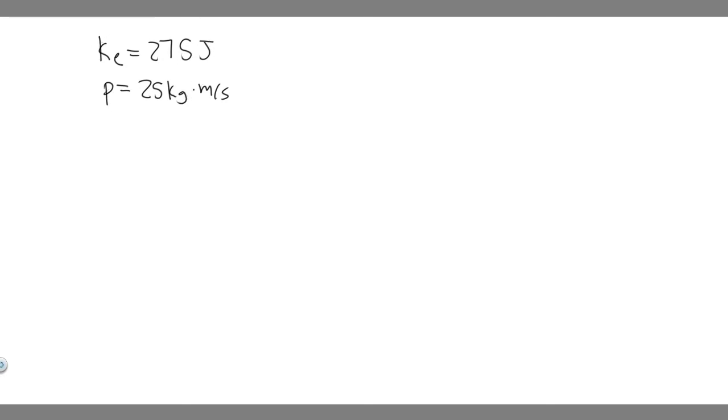So we know the kinetic energy, 275 joules, and we know the momentum is 25 kg meters per second. What we're trying to do is find the speed, or the velocity, and we're also trying to find the mass for B.